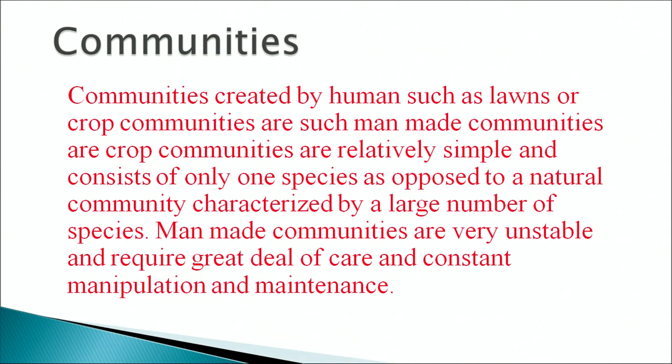Even in the same community, there may be seasonal variation in species composition. Communities created by humans, such as lawns or crop communities, are man-made communities which are relatively simple and consist of only one species, as opposed to a natural community characterized by a large number of species.